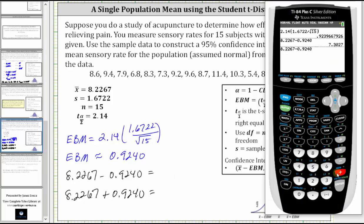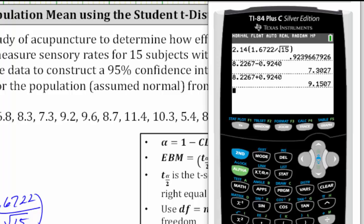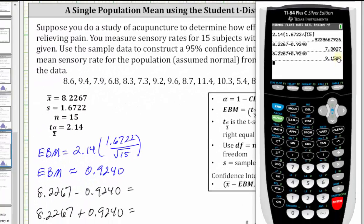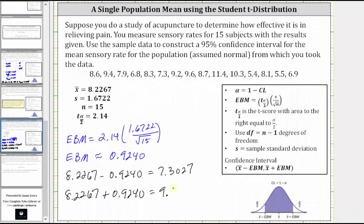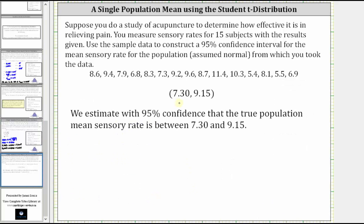Going to the calculator, we have a lower bound of 7.3027 and an upper bound of 9.1507. Let's go ahead and round these to two decimal places. So we have a confidence interval of 7.30 to 9.15, which means we estimate with a 95% confidence that the true population mean sensory rate is between 7.30 and 9.15. I hope you found this helpful.